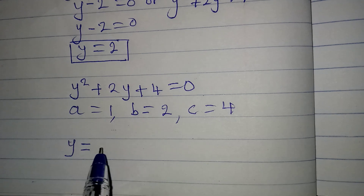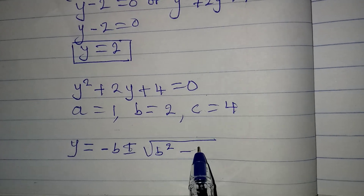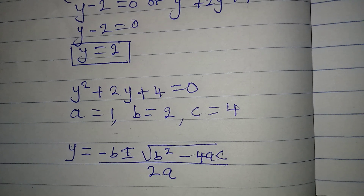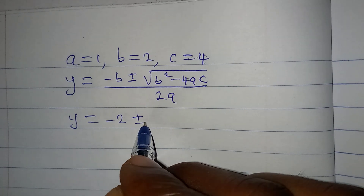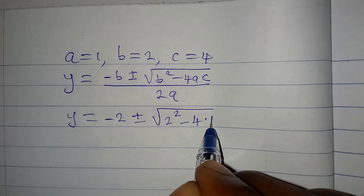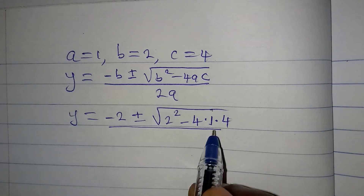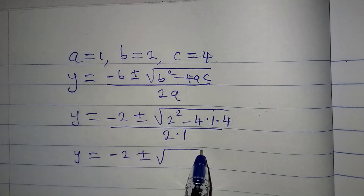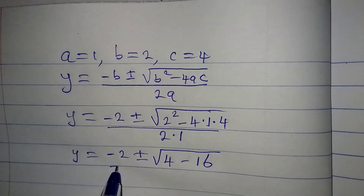Since we have y in the quadratic equation, y equals minus b plus or minus the square root of (b squared minus 4ac), all over 2a. Substituting: y equals minus 2 plus or minus the square root of (2 squared minus 4 times 1 times 4), over 2 times 1.